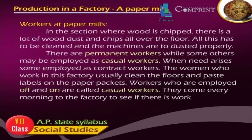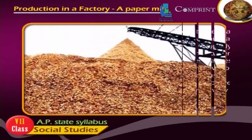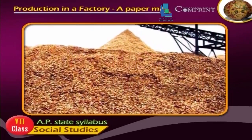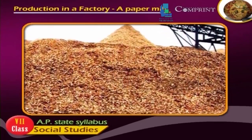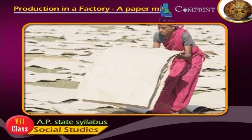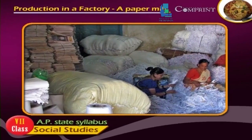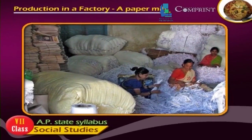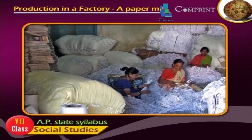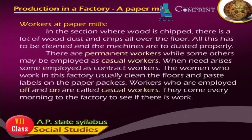Workers at paper mills: In the section where wood is chipped, there is a lot of wood dust and chips all over the floor. All this has to be cleaned and machines are to be dusted properly. There are permanent workers, while some others may be employed as casual workers when the need arises, and some are employed as contract workers. The women who work in this factory usually clean the floors and paste labels on the paper packets. Workers who are employed off and on are called casual workers; they come every morning to the factory to see if there is work.